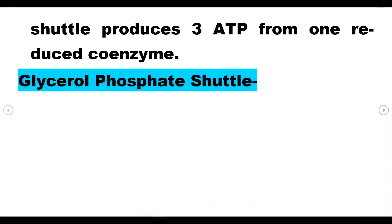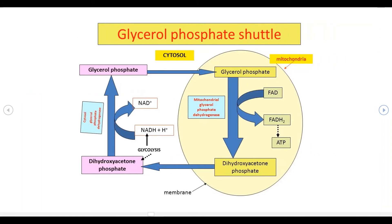तो malate-aspartate shuttle system में तीन ATP की production होती है एक NADH2 से। दूसरा है glycerol phosphate shuttle। इसमें क्या होता है - जो dihydroxyacetone 3-phosphate है, वह reduced NADH से reducing power को gain करके glycerol-3-phosphate में convert हो जाता है।